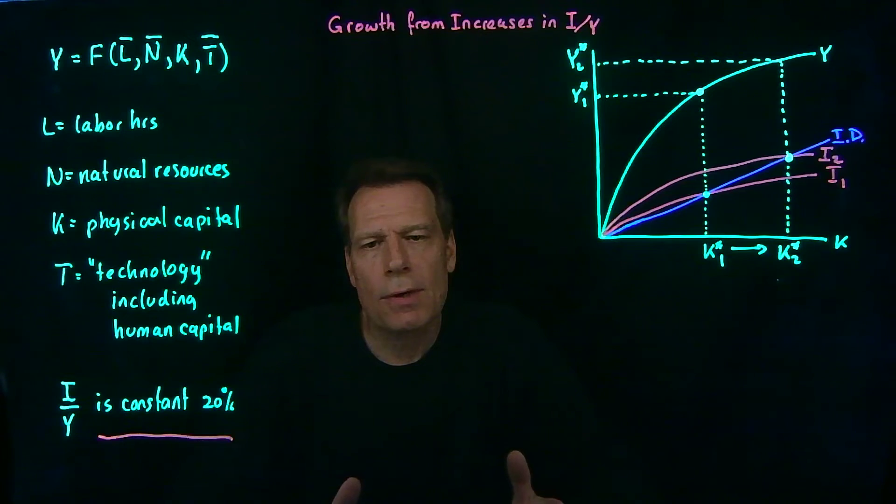So while by increasing the labor hours through increasing fertility or increasing immigration will produce more GDP, it won't produce as much of a percentage increase in per capita GDP. And of course there's also a limit to how much we can increase population.